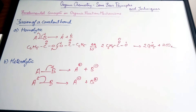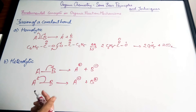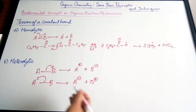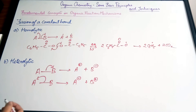In heterolytic fission, one atom gets both the electrons while the other is left with a positive charge. This depends on electronegativity — the ability of an atom to pull the shared electrons towards itself. If carbon is more electronegative than the atom it is bonded to, it forms a negatively charged ion called a carbanion. If carbon is less electronegative, it forms a positively charged carbocation.